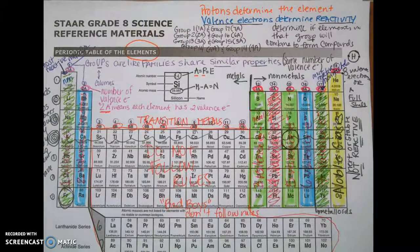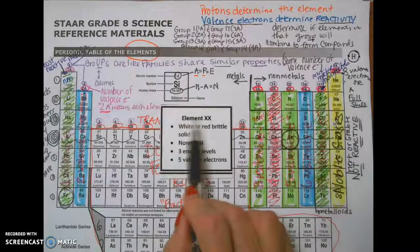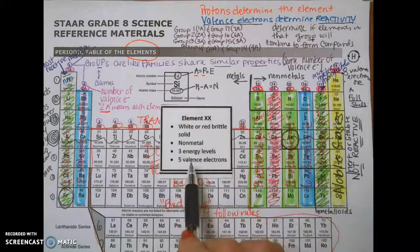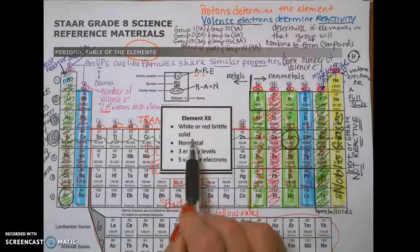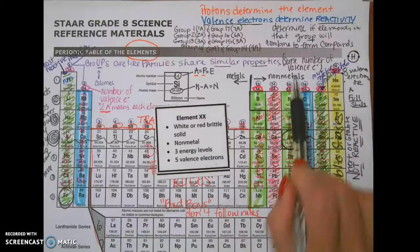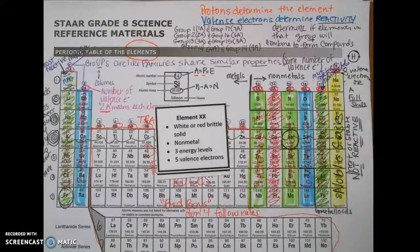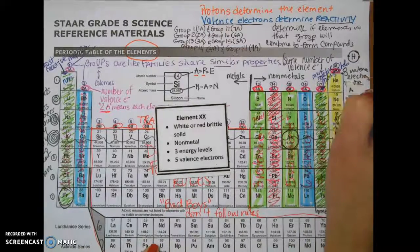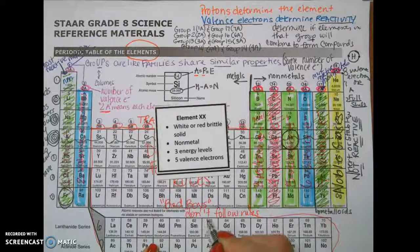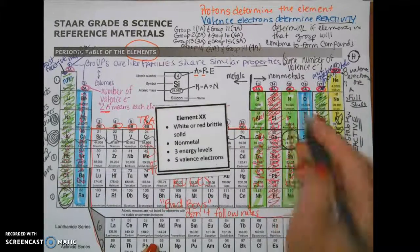Let's try one more — element 20, Roman numeral 20. The clues are important here. It says it's a white or red brittle solid — brittle gives us a clue that it must be a nonmetal. It has three energy levels and five valence electrons. So three energy levels means I'm in period 3, and five valence electrons means I'm in group 5A. The answer is phosphorus.